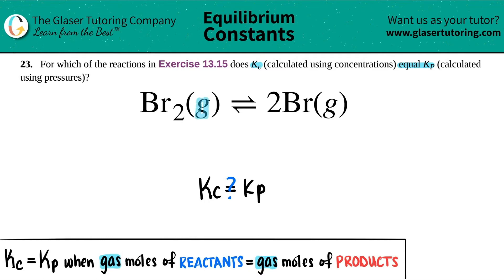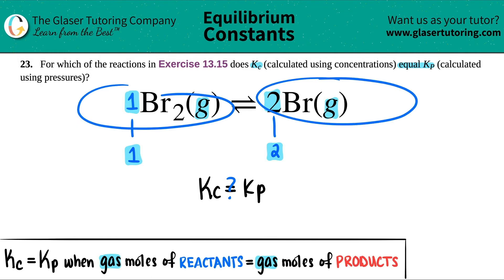In this case, I have a gas on the left side and a gas on the product side, so I'm going to look at those two substances. The moles are just the coefficients — the big numbers in the front. Here I only have one Br2, so one total mole on my reactant side, and they gave me a two, so two total moles on my product side.